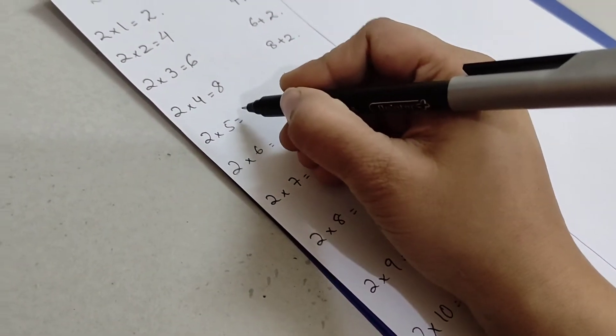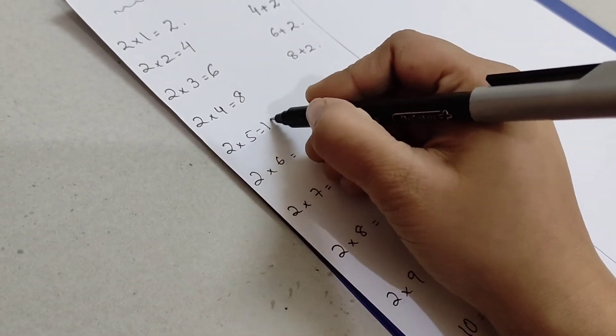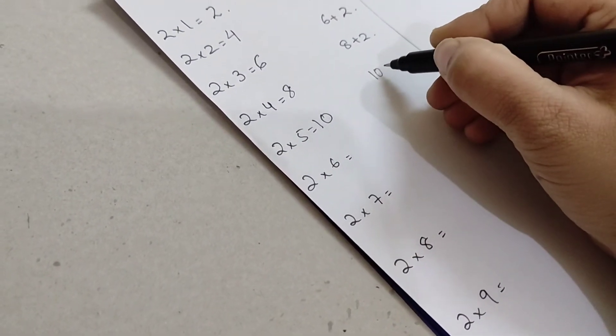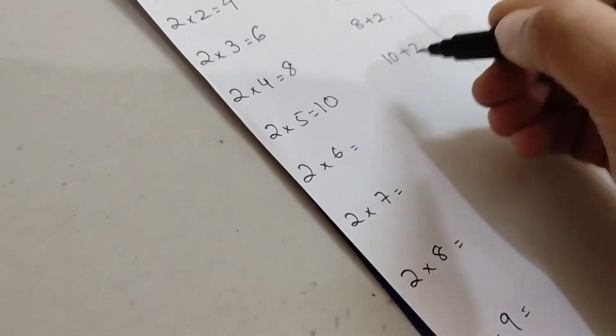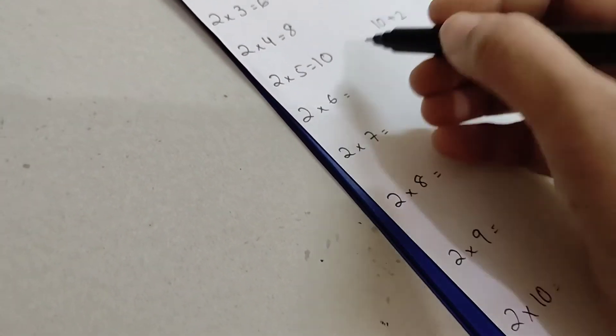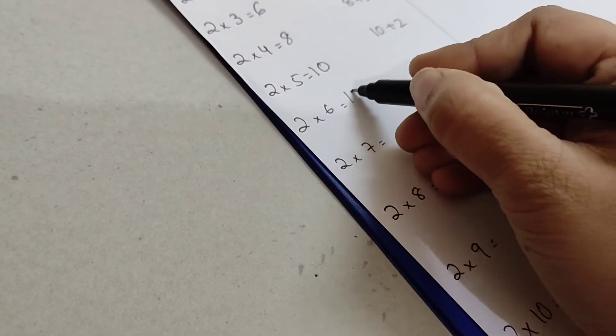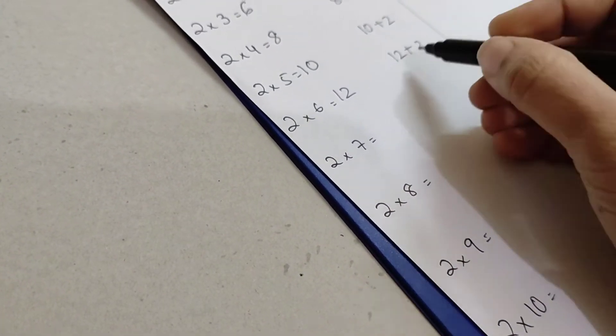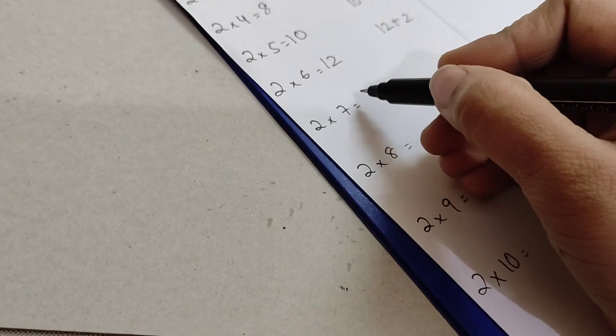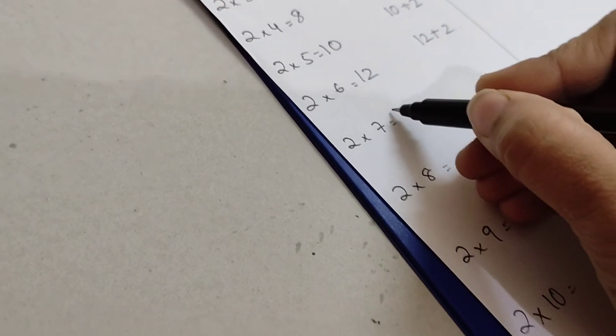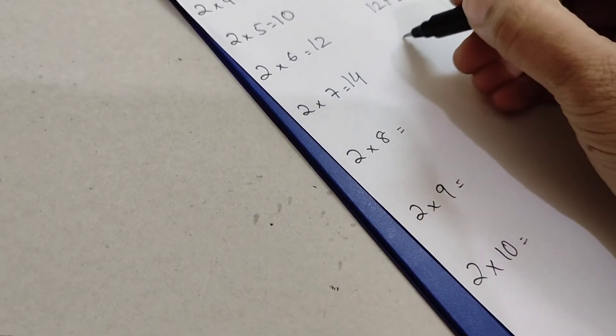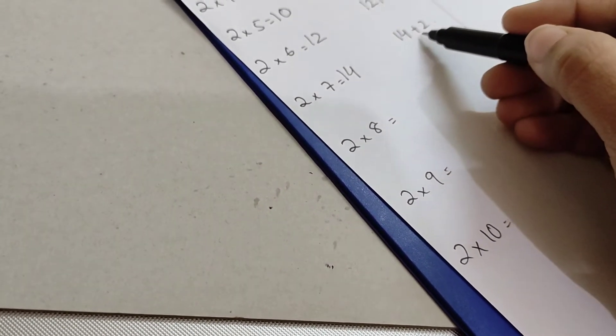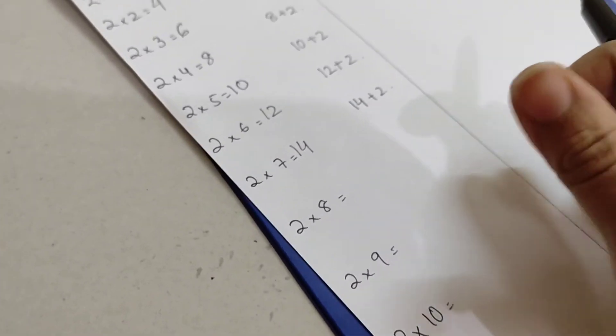If you're adding two more to eight you will have ten. Ten plus two is twelve. Now for twelve, if you add two more, you will have fourteen. Good. For the next number, you add two more, so you will have...